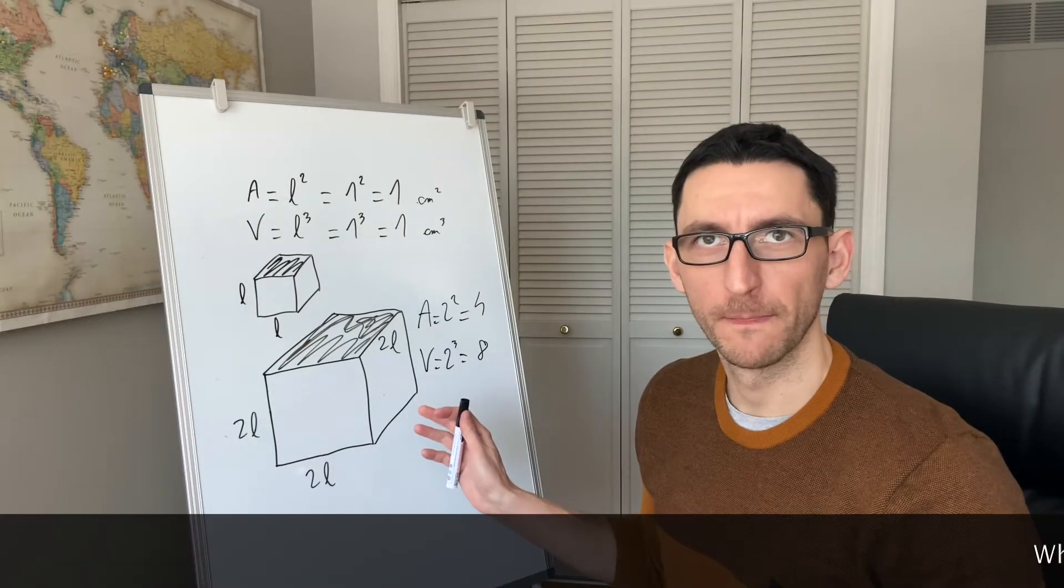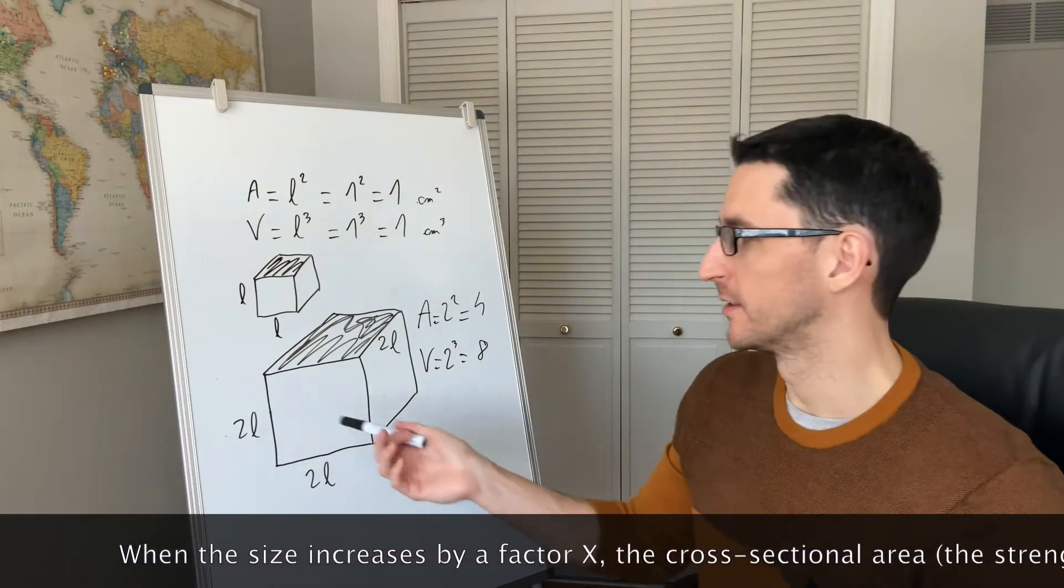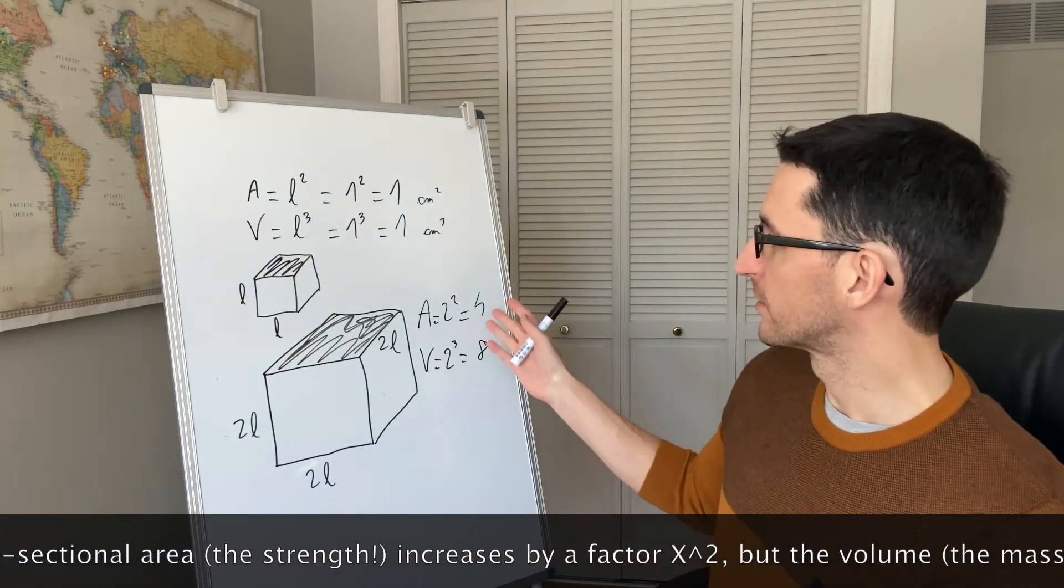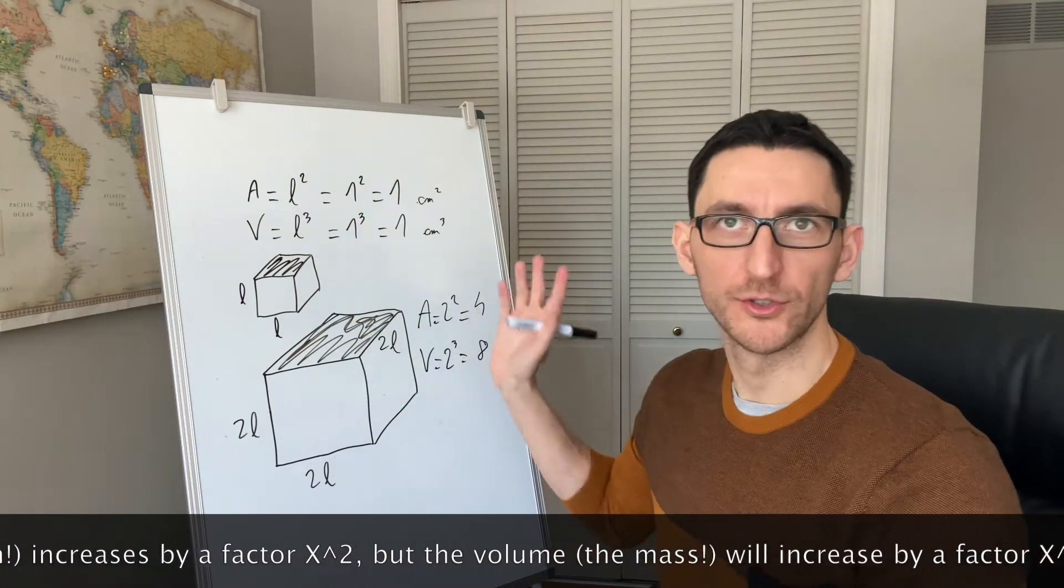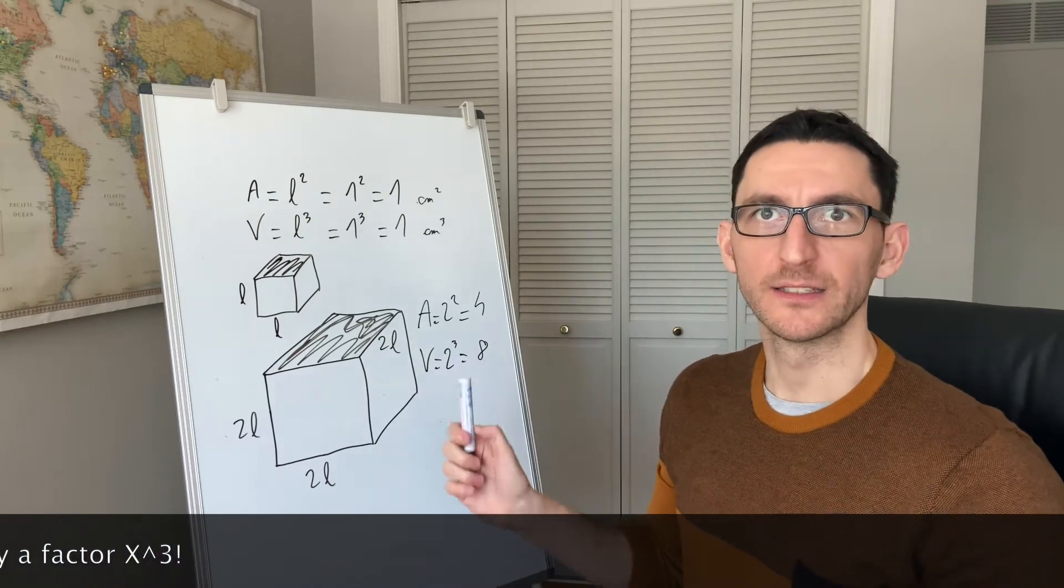In other words, when the size of the cube increases by a factor of x, in that case 2, the cross-sectional area increases by a factor of x to the power of 2, but the volume, or the mass, will increase by a factor of x cubed.